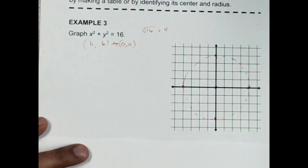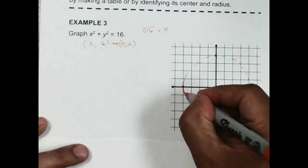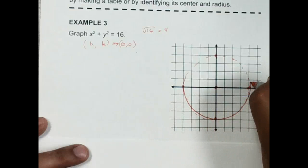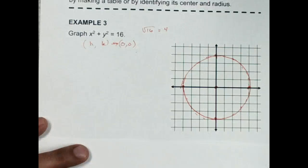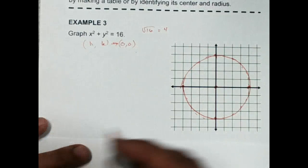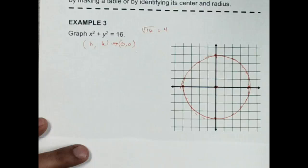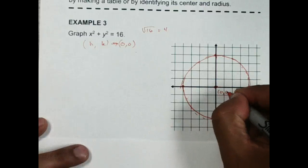All right, something like that. That would be your graph. I guess we can draw this in. All right, that would be it. That would be the graph with your center as (0, 0).